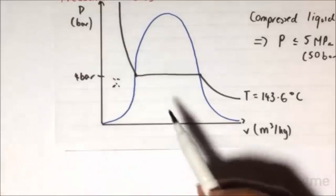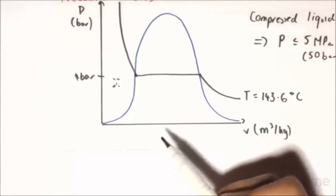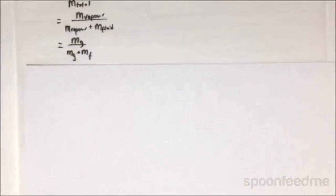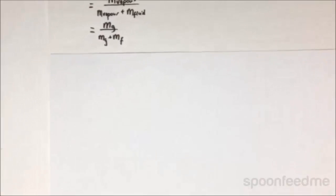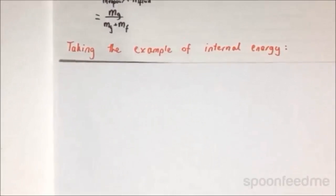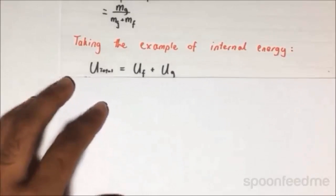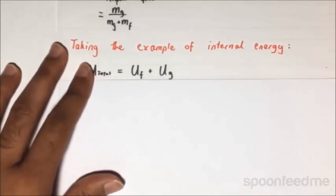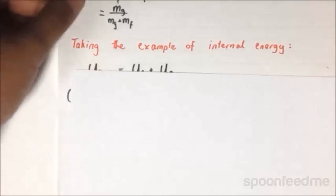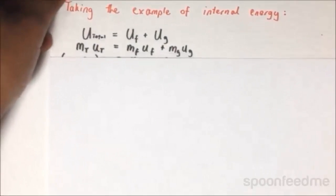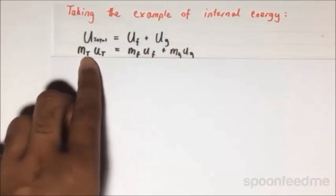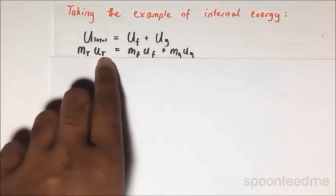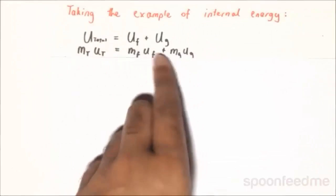Now, if the water is in this two-phase region here, then we need to use our value of x. Now, recall that x is equal to mg on mg plus mf. If we take the example of internal energy, if you have the total internal energy, it will equal to the internal energy of the fluid plus the internal energy of the gas, which makes sense. Now, making that into specific internal energy, we just times it by its mass. So the total mass times by the specific internal energy total is equal to as follows.